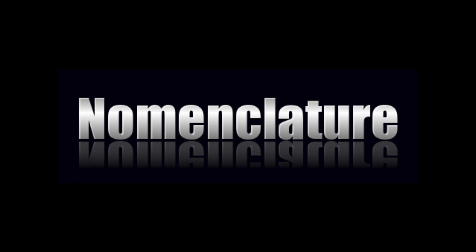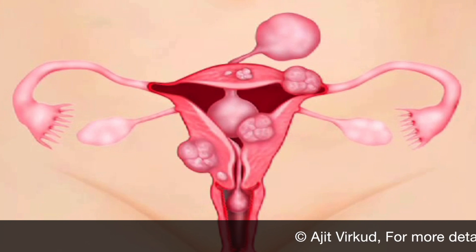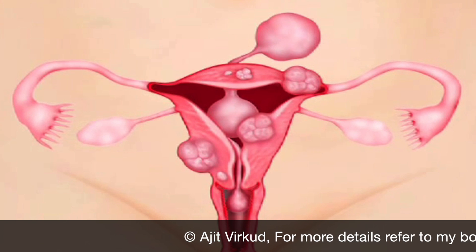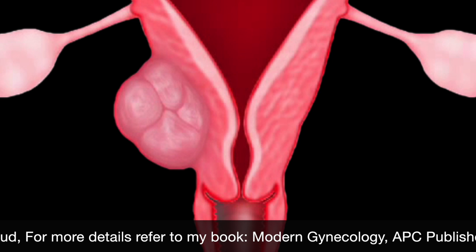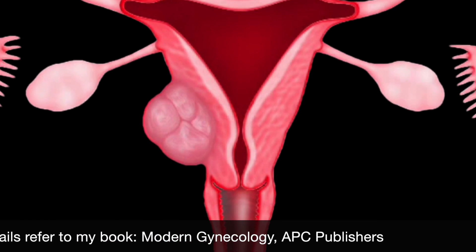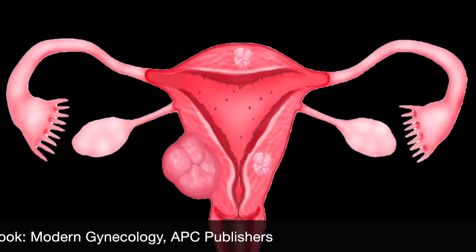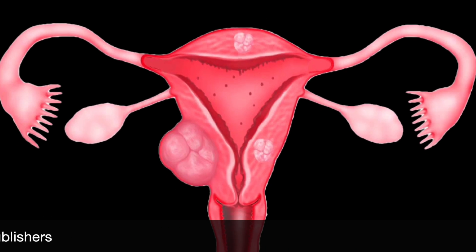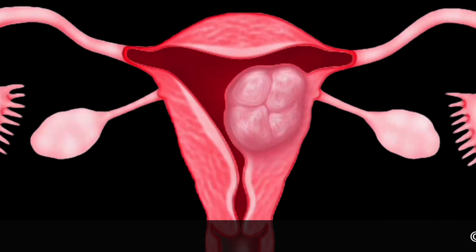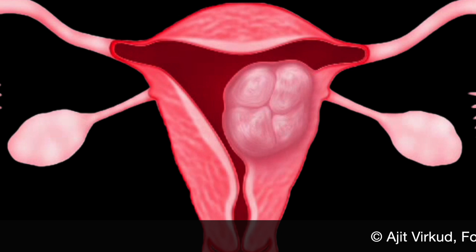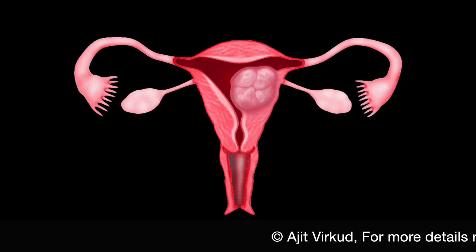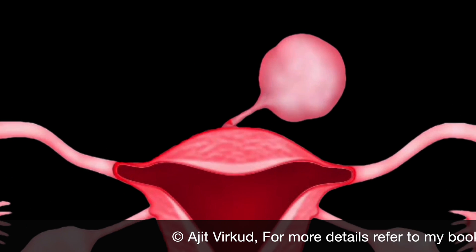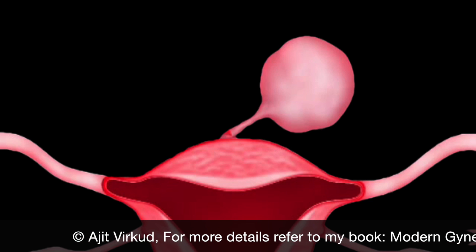First, I am going to discuss at length about the nomenclature of fibroids because there is something new. This diagram illustrates different types of fibroids. Based on their location and direction of growth, uterine fibroids are named as follows. Fibroids that grow and lie under the uterine serosa are called sub-serous fibroids. Fibroids which are situated entirely within the myometrium are referred to as intramural fibroids. And fibroids that grow and continue to lie under the endometrium are called sub-mucous fibroid polyps. Sub-serous and sub-mucous fibroids are further classified as sessile or pedunculated.